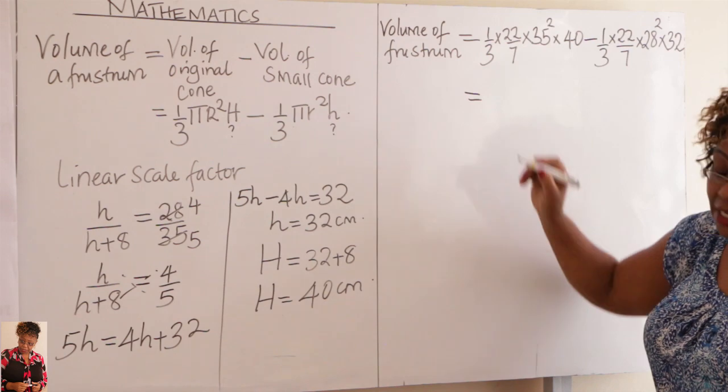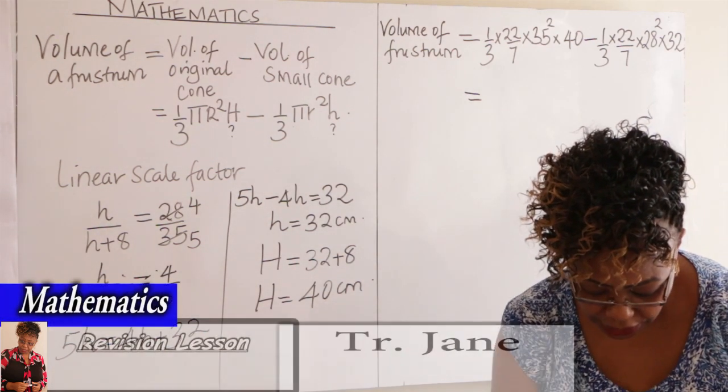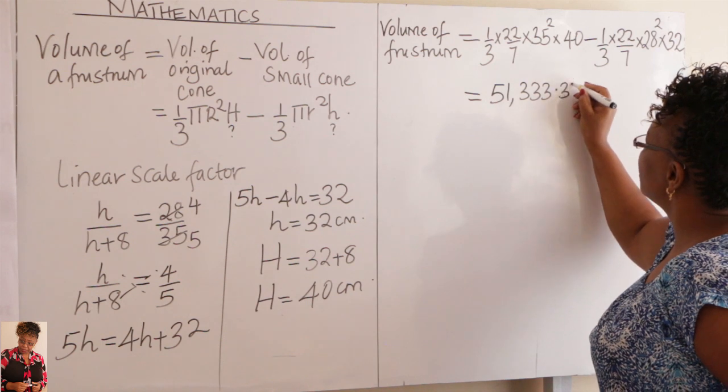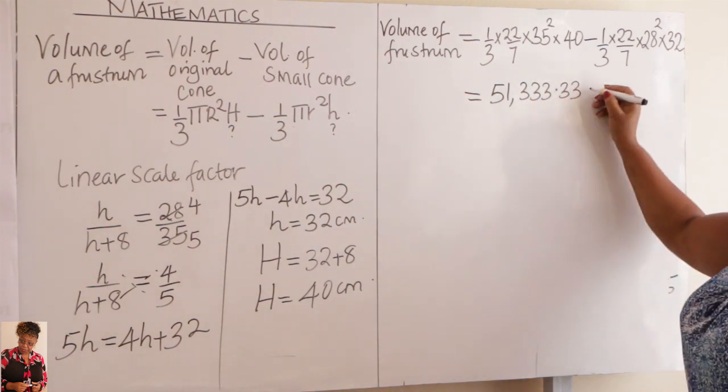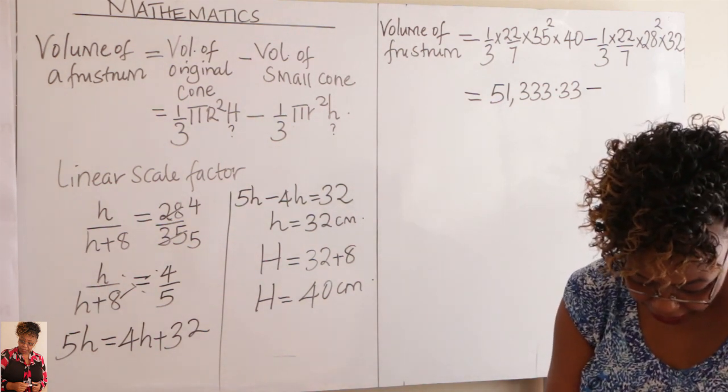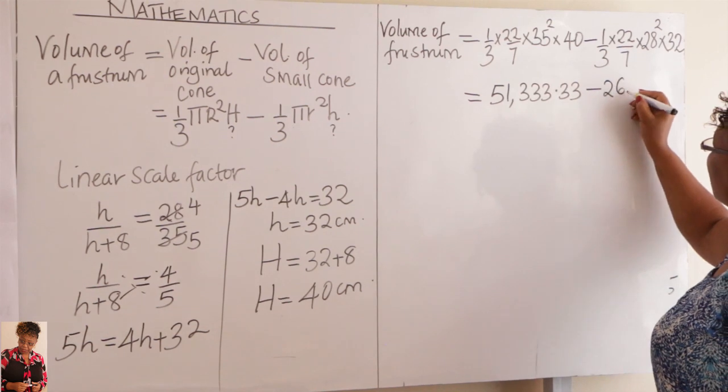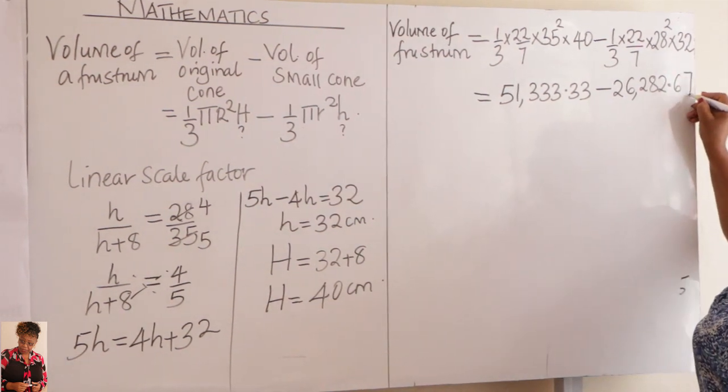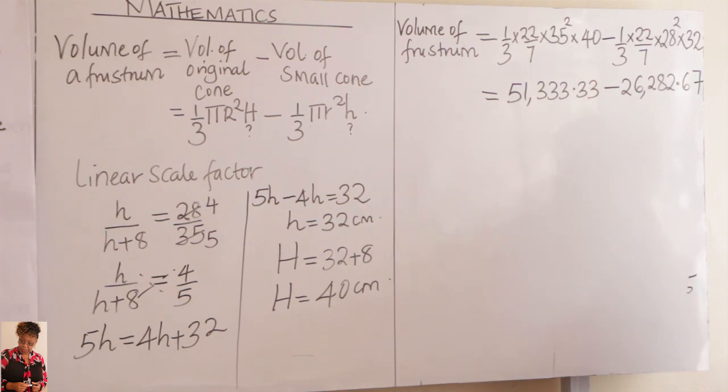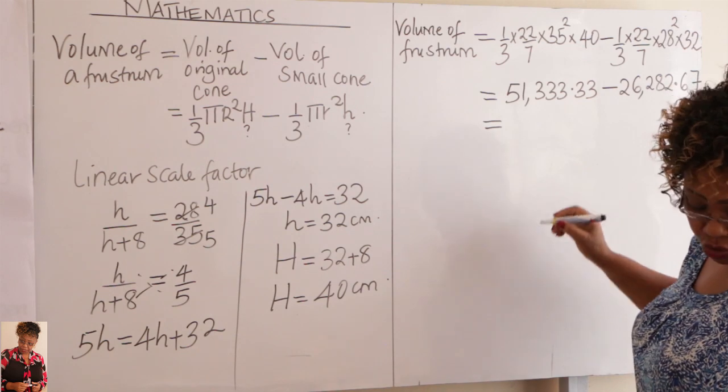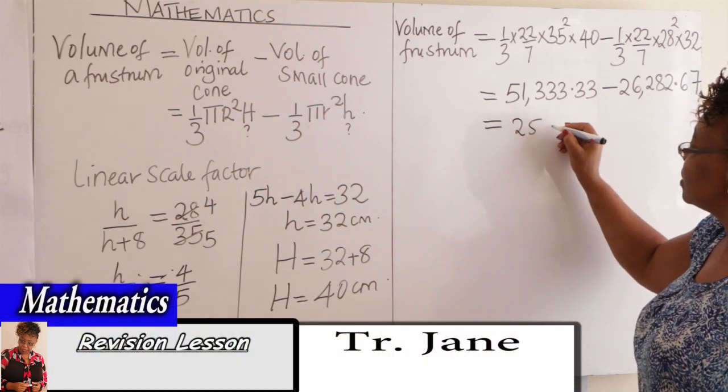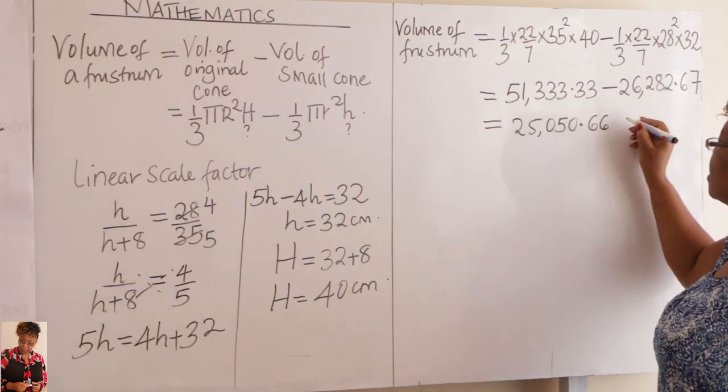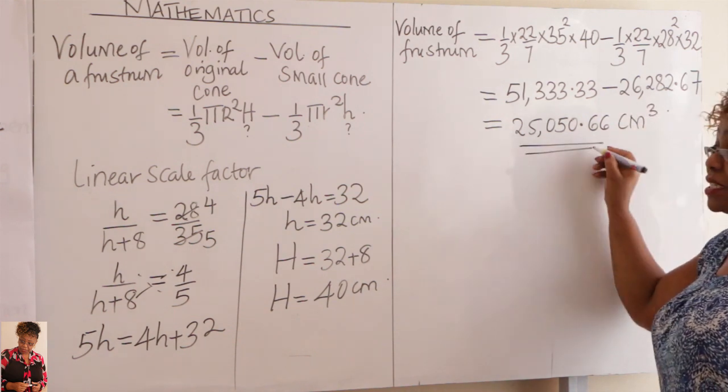So using a calculator, you work out this learner. What will you get? Using a calculator, the first one here should give us 51,333.33 to the nearest two decimal places. Then you subtract. You work out the other one with the calculator. You get 26,282.67 to the nearest two decimal places. You subtract this. What will you get? You would get 25,050.66 centimeters cubed.